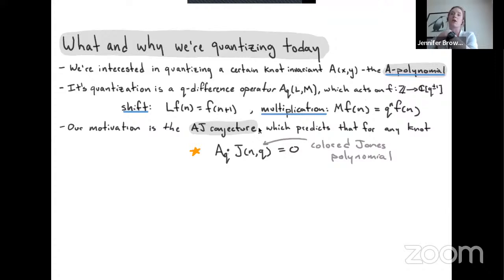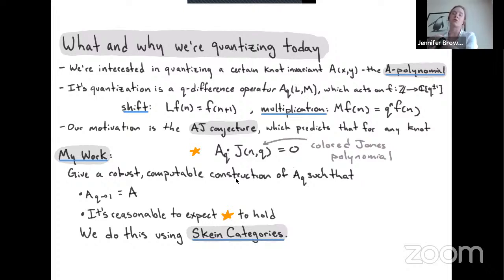Our motivation is the AJ conjecture, which predicts that for any knot, the quantum version of the A polynomial applied to the colored Jones polynomial gives zero. My work is to give a robust, computable construction of this quantization A_q such that: when I send q to 1, I recover the A polynomial; and a certain star condition also holds. I'm going to do this using skein categories.